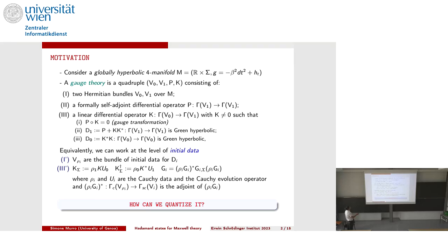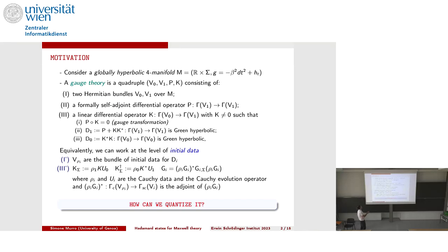To overcome the problem that P is in general not hyperbolic — as for example in the Maxwell operator seen as the composition of the co-differential and differential, or the linearized Einstein equation — we look for an operator K acting from sections of V0 to sections of V1, such that the range of K sits in the kernel of P. In this way, K can be interpreted as a gauge transformation, and its range models all possible gauge transformations of the theory.